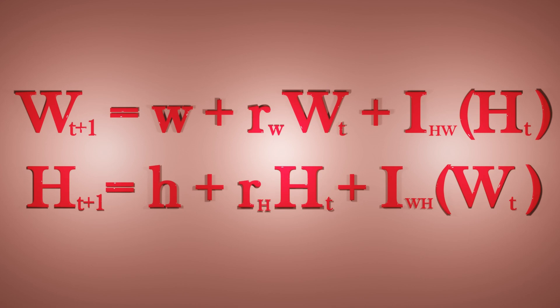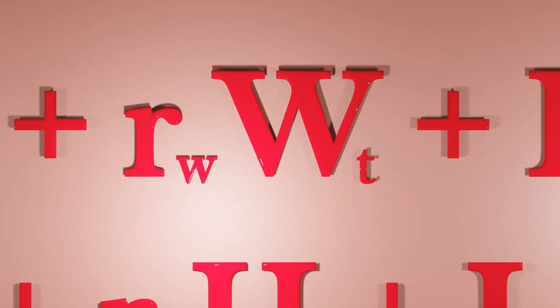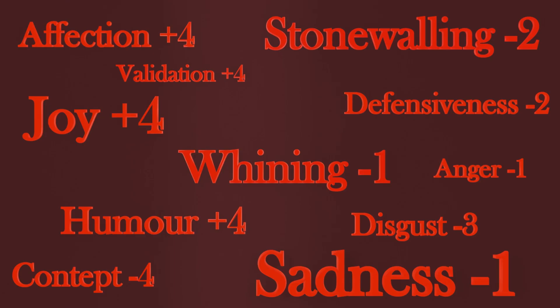The values that we plug into these variables are determined by a mathematical system. For example, to enumerate wt, when the wife expresses emotions like joy, humor, and affection, plus 4 is substituted into this variable.